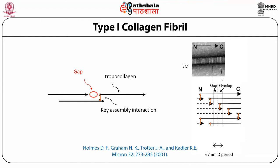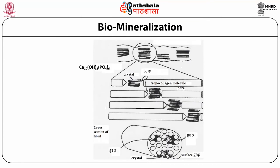Looking at collagen fiber under electron microscopy, you can see definite periodicity in the collagen fibers. This relates to the arrangement of tropocollagen — between two tropocollagens there is a gap, and this gap creates a 67 nanometer D-period. This particular gap can be utilized for biomineralization: you can grow crystals of calcium phosphate or calcium hydroxyapatite there, which strengthens the interactions between tropocollagen molecules. This is an example of template-driven biomineralization.